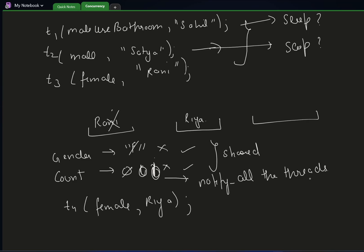We notify them that there is some change in counter — maybe you can enter now. This notification is very important. Whenever someone enters the washroom, they have to notify other threads. There's another case: suppose Rani, Ria, and Rashi are all inside — counter is three. If Siya comes, she cannot enter since the counter is already three. Whenever Rashi, Ria, or Rani leave, they notify everybody. Then Siya can enter, while the males still have to wait until the counter becomes zero.